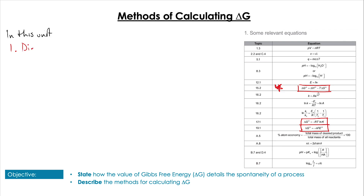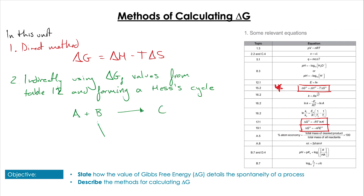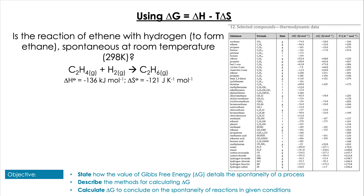This is by no means the only way of calculating ΔG, as there are a few methods given in the data booklet. The methods we're going to use in this unit include ΔG = ΔH − TΔS, but we can also use the indirect method of using Gibbs formation values from the data booklet and creating a Hess's cycle — much in the same way we used enthalpy of formation values, with elements at the bottom of the Hess's cycle and arrows going upward. In this video we'll go through each method in turn and then have some practice.